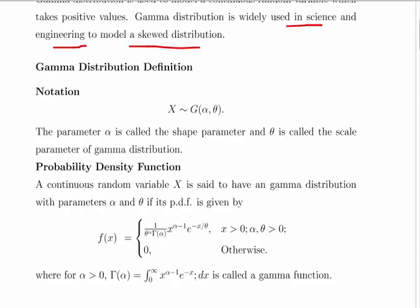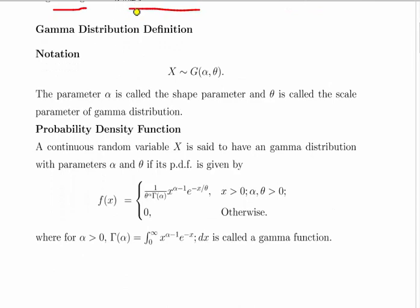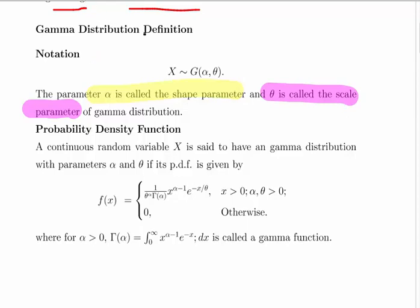The parameters are as follows. We have the shape parameter alpha and the scale parameter theta. In other resources such as textbooks, they might appear as n and k, or alpha and beta. We use this notation to describe a Gamma random variable x with parameters alpha and theta.